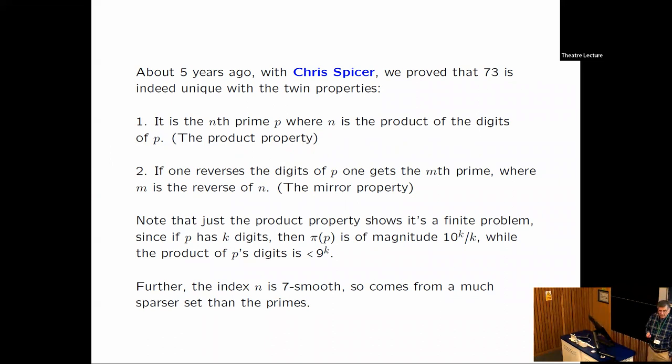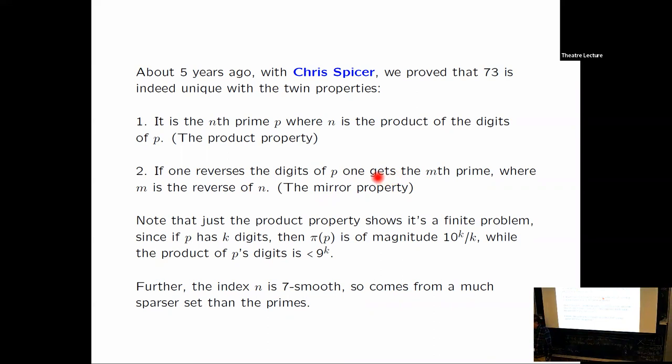73 is the 21st prime, and 7 times 3 is 21. Then if one reverses the digits of the prime to get, let's say, 37, looking at the prime that is the mth prime, m is the reverse of n. So the 12 is the reverse of 21, it's the mirror property. So we're supposed to prove that 73 is the unique prime with these two properties.